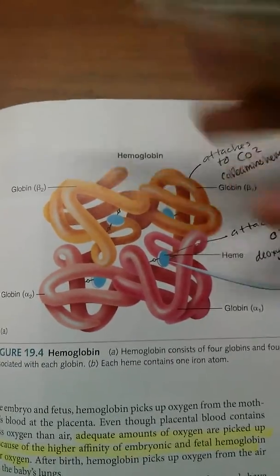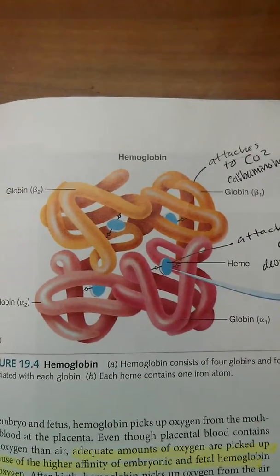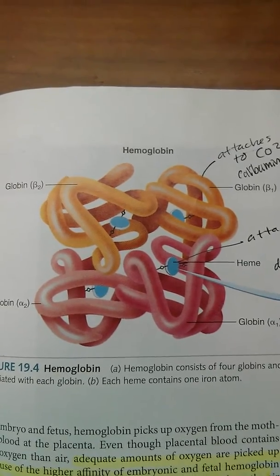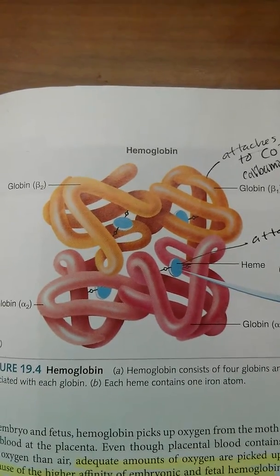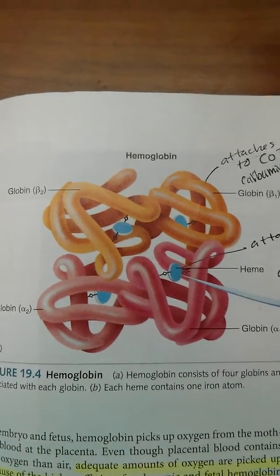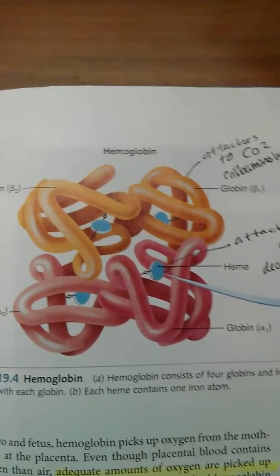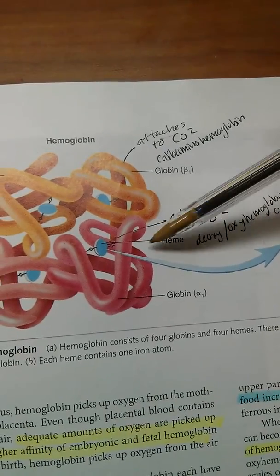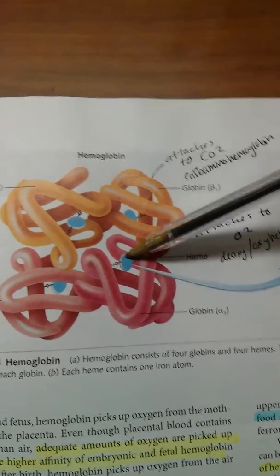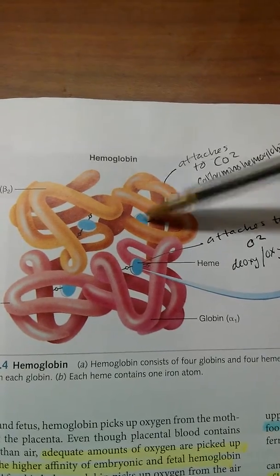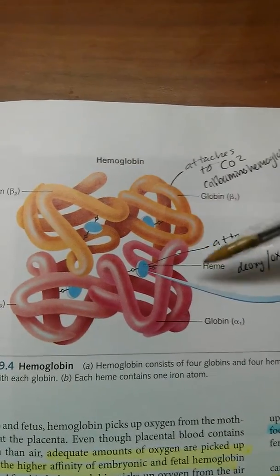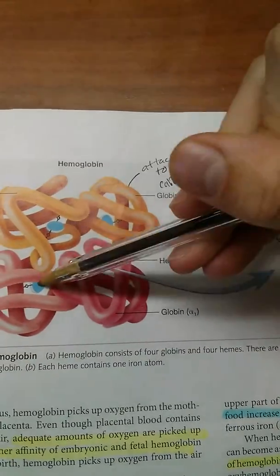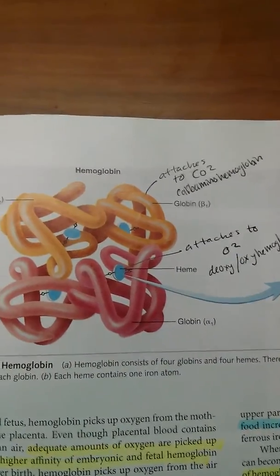The function of a red blood cell is to deliver oxygen to the tissues and cells, and also to transport carbon dioxide as a waste product away from the cells, carrying it back to the lungs where we can exhale it. The oxygen actually attaches to the heme groups, so any one given hemoglobin can deliver up to four oxygen molecules at a time.